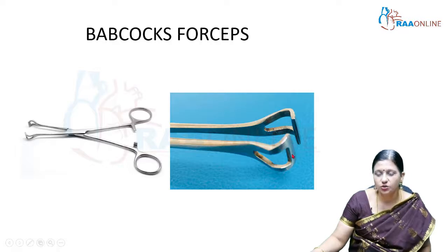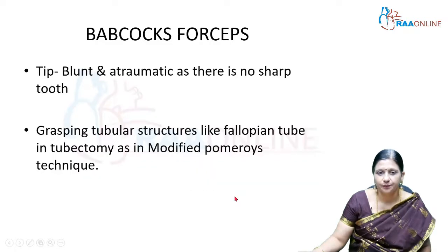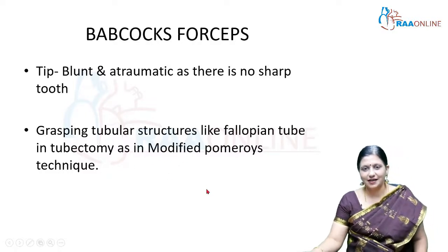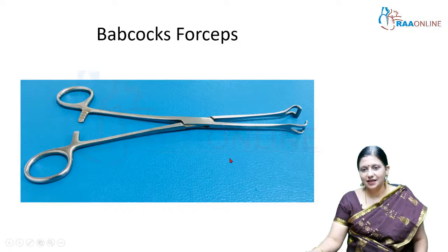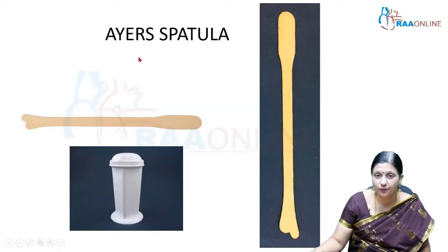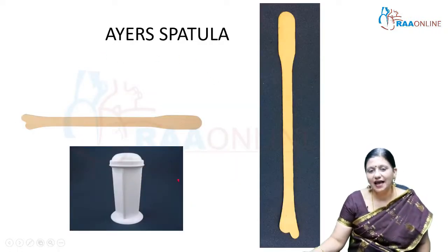Babcock's forceps is a non-traumatic, gentle instrument used to hold tubular vascular structures like the fallopian tube. It has a latch, is blunt and atraumatic, with no sharp teeth. It is used for grasping tubular structures like the fallopian tube during tubectomy, including the modified Pomeroy's technique for tubal sterilization.